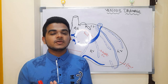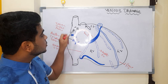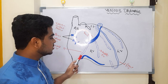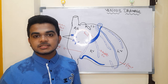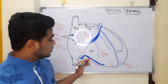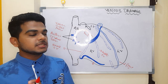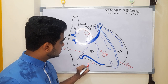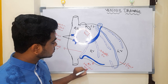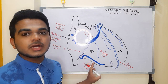Moving to the right marginal vein and left marginal vein: the right coronary artery goes downward and gives one branch known as the right marginal artery. The right marginal vein accompanies this artery. This is the fourth vein — a branch draining into the coronary sinus.